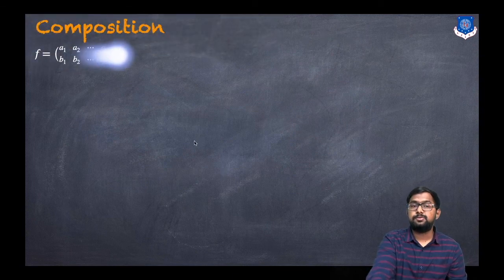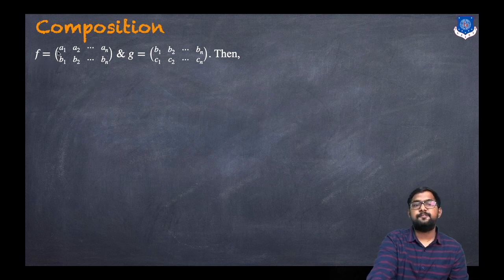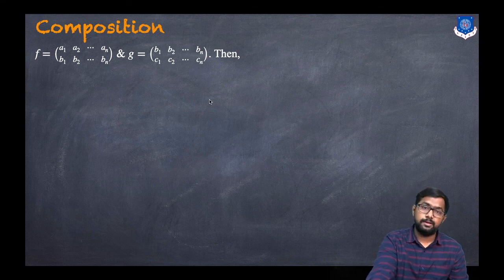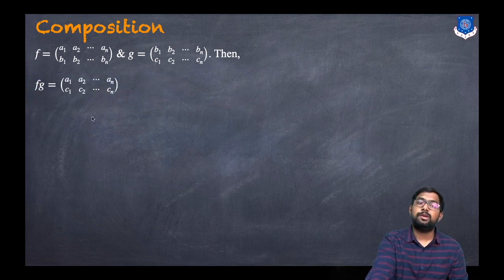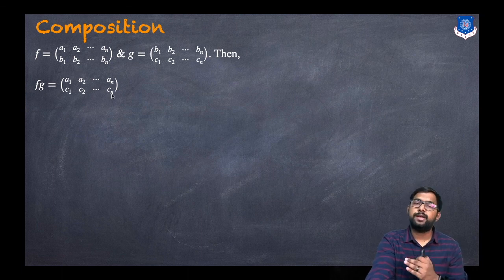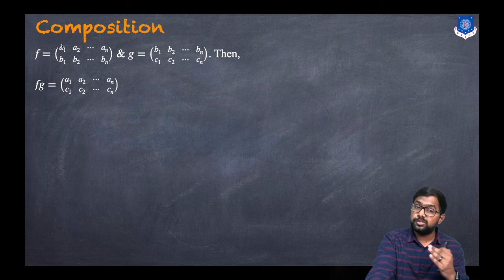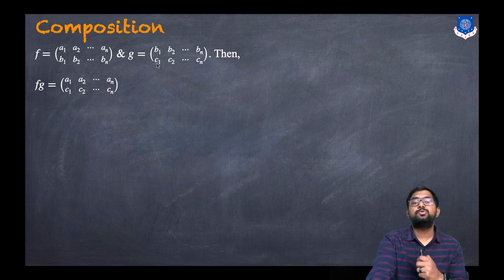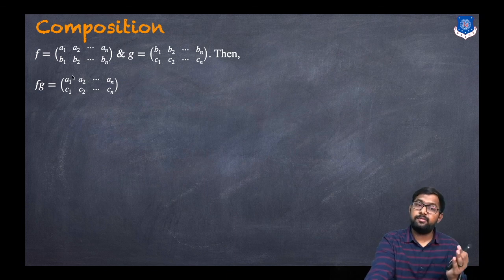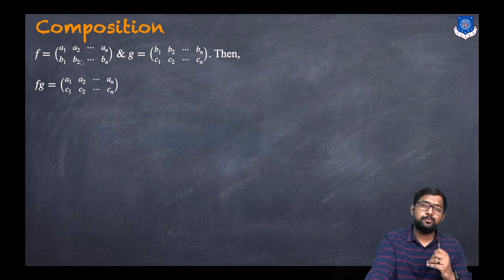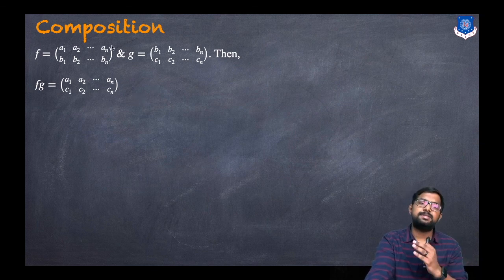What is the composition of permutations? Let f = (a1 b1 / a2 b2 / ... / an bn) and g = (b1 c1 / b2 c2 / ... / bn cn). Then the composition f∘g is (a1 c1 / a2 c2 / ... / an cn). This is because a1 maps to b1 under f, and b1 maps to c1 under g, so the final image of a1 is c1. Similarly, a2 maps to b2 then to c2, and so on.